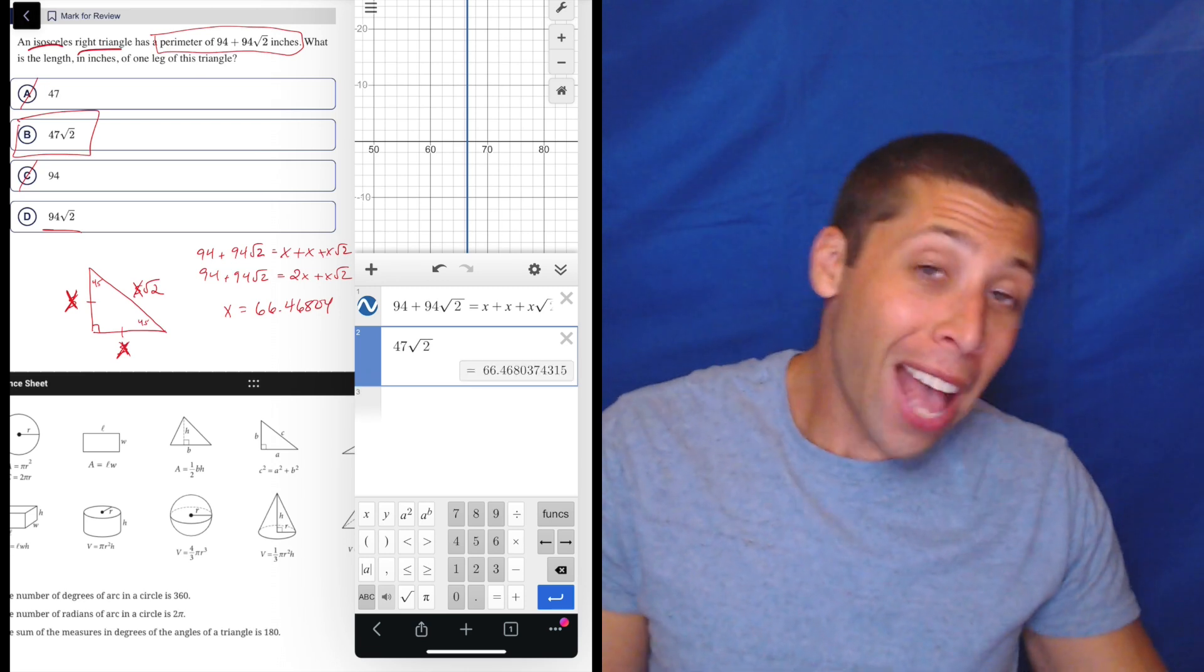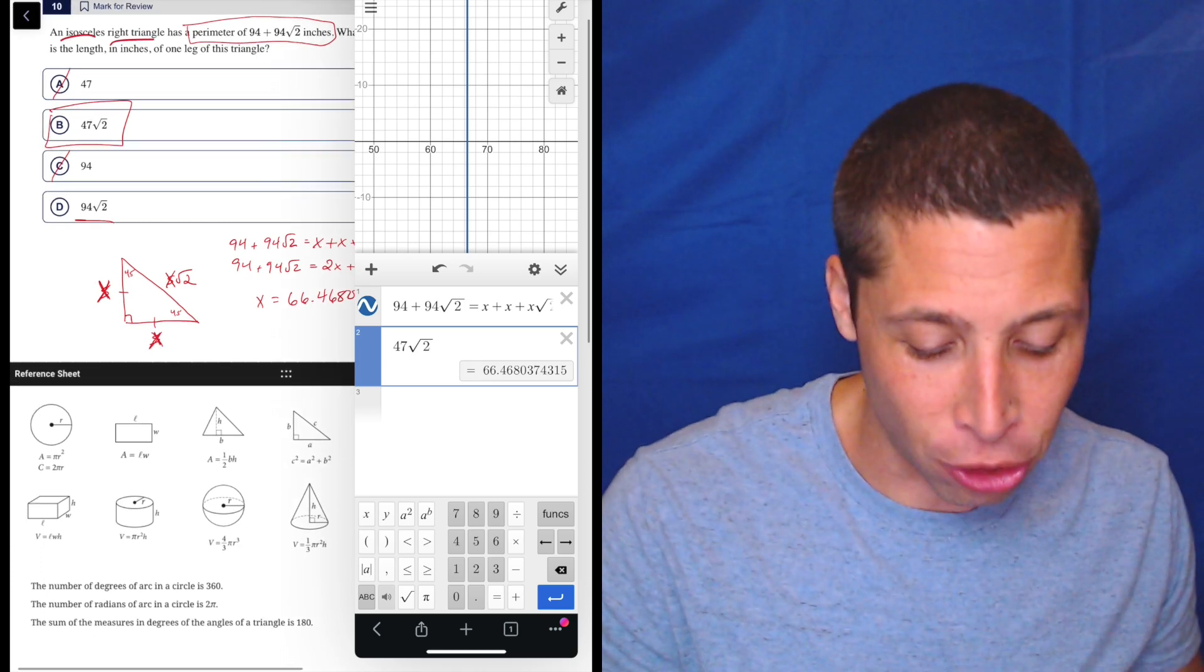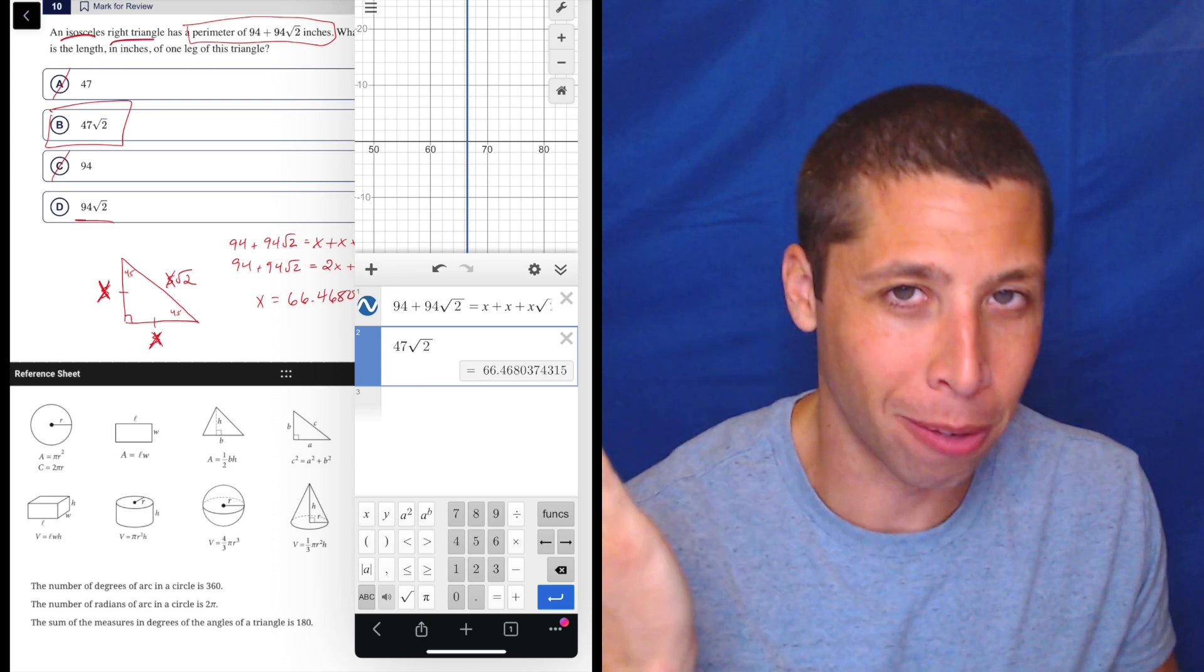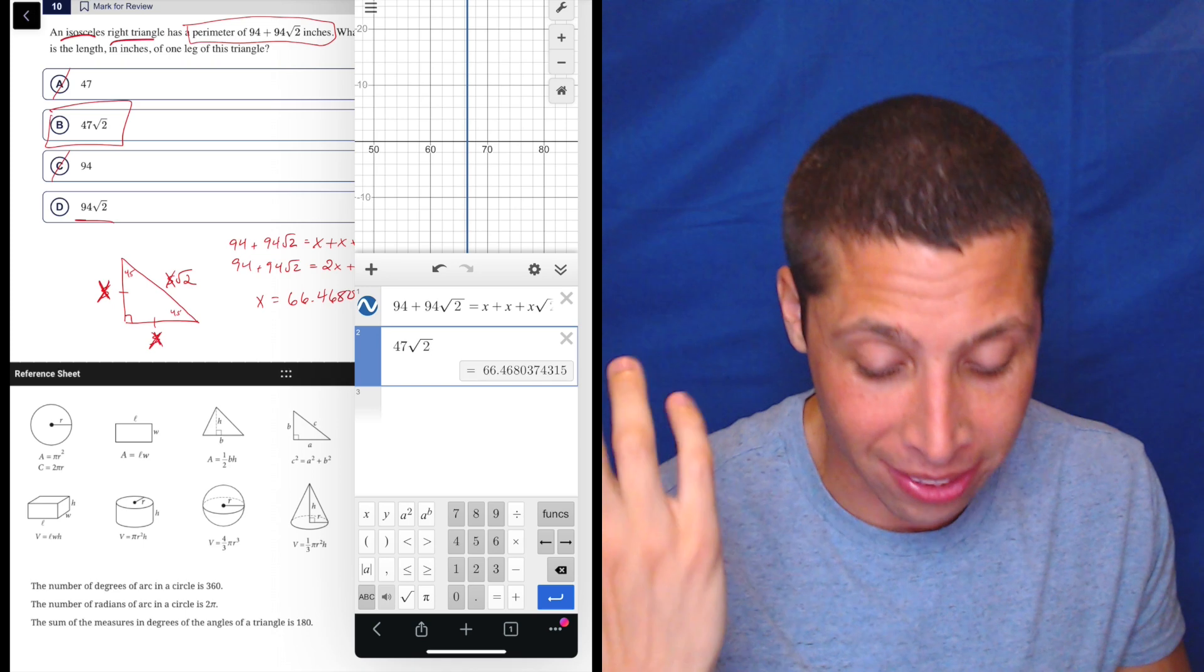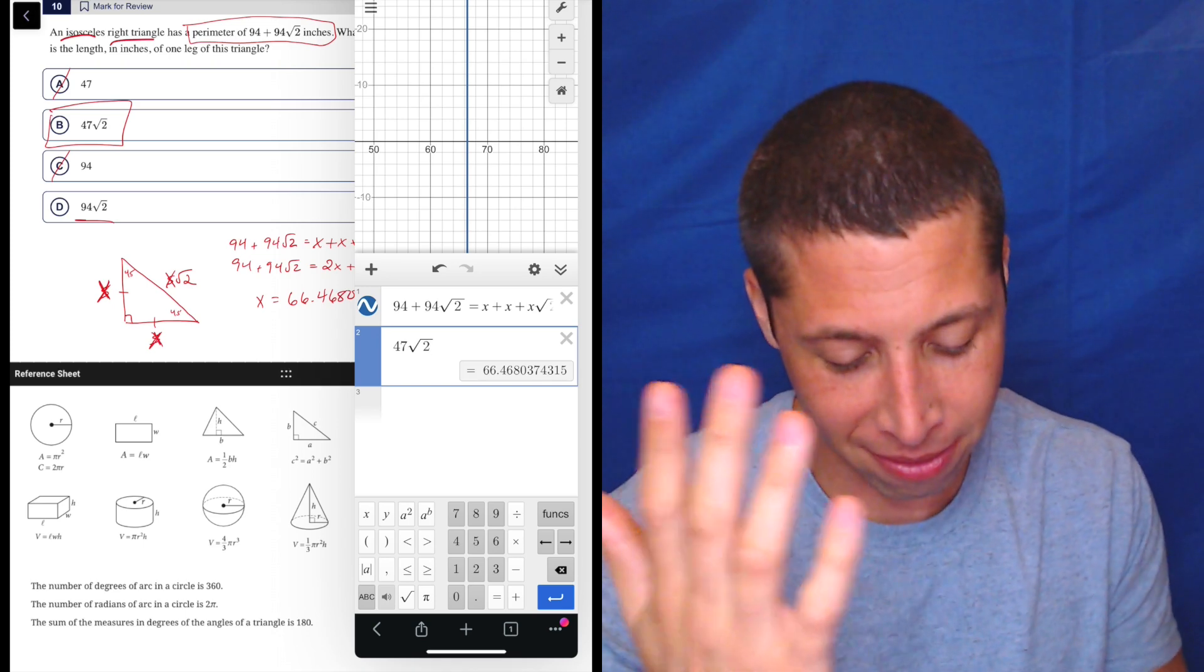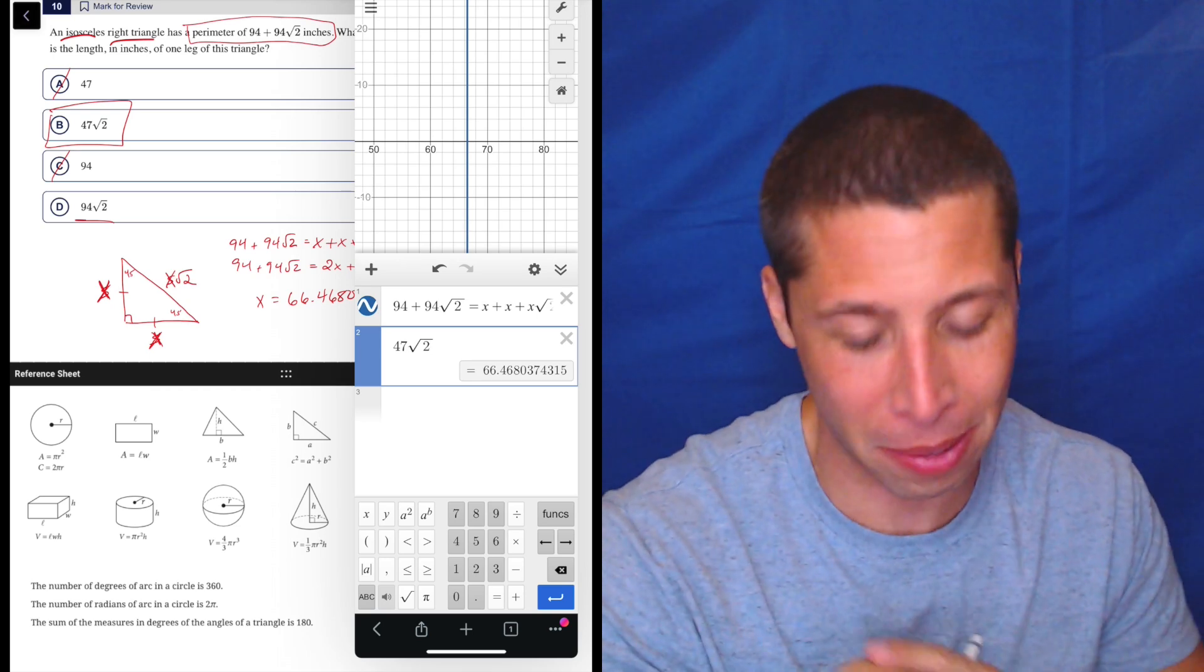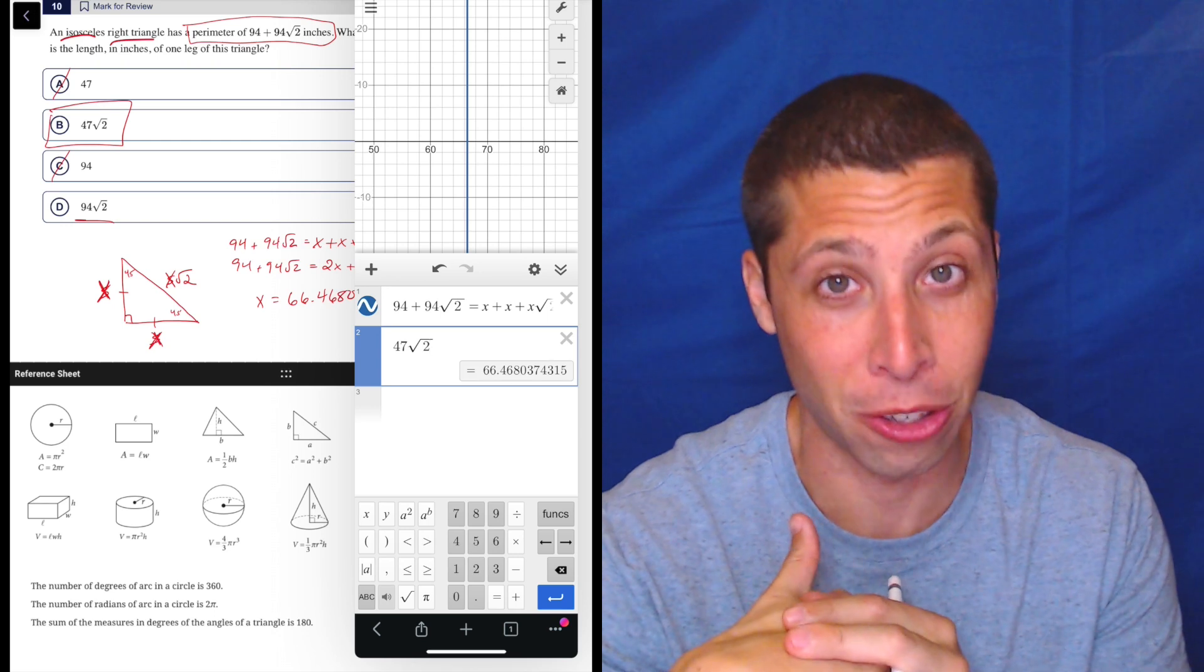So yeah, you could do this using algebra and solve for X. And maybe there's even a little bit of a guess and check involved here where you can kind of just use the answers and be like, well, I know it's not going to be one of the nice ones like C or A and 94 root 2 wouldn't make sense because then that would be the hypotenuse of anything, but then you would need to double it. So you can kind of just maybe see that it's got to be B almost in like a guess and check kind of way without actually doing the checking.